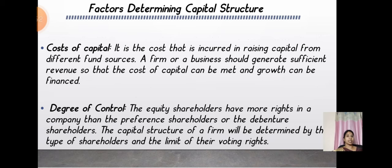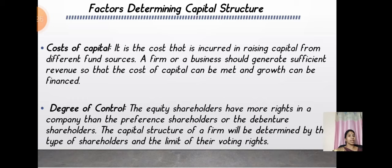Factors determining capital structure: The first factor is cost of capital, which is the cost incurred in raising capital from different sources of funds. In a business, sufficient revenue is needed so that the cost of capital can be met and growth can be financed. The second factor is degree of control — equity shareholders have more rights in a company than preference shareholders. The capital structure will be determined by the type of shareholders and the extent of their voting rights.